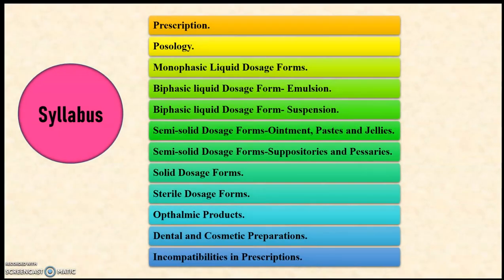As we have seen in the previous presentation, there are total 12 chapters in Pharmaceutics 2. The first 6 I have covered in my previous video, you can refer that video. Now in this presentation, we are going to see the next 6 chapters: semi-solid dosage forms including suppositories and pessaries, then solid dosage forms, sterile dosage forms, ophthalmic products, dental and cosmetic preparations, and incompatibilities in prescriptions.